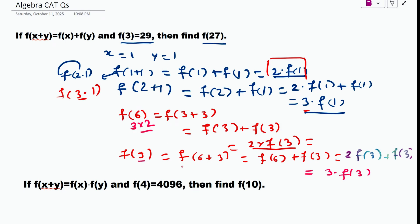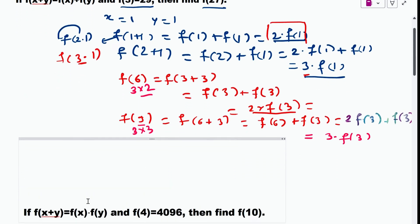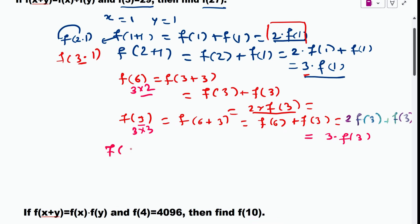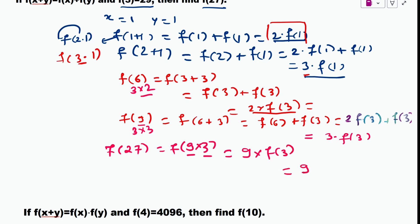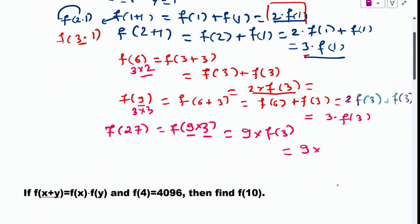For f(27), we can write it as f(9·3), and by the pattern this equals 9·f(3). We already know f(3) = 29, so f(27) = 9 × 29.